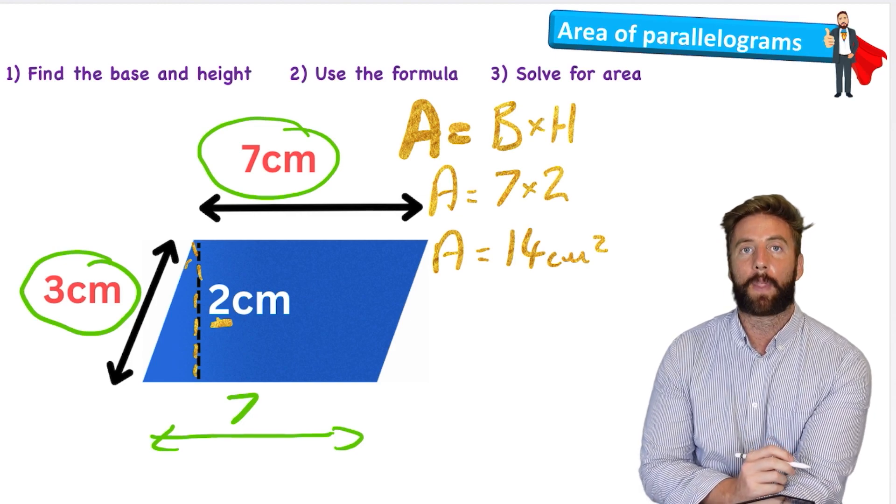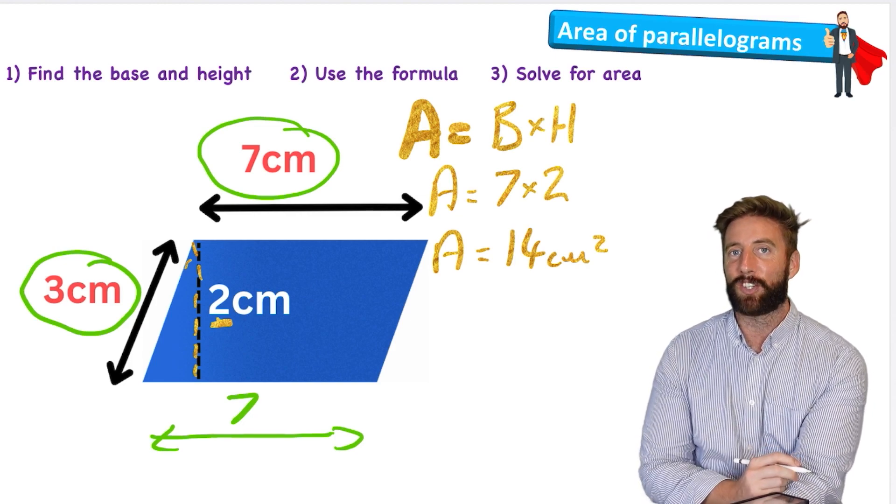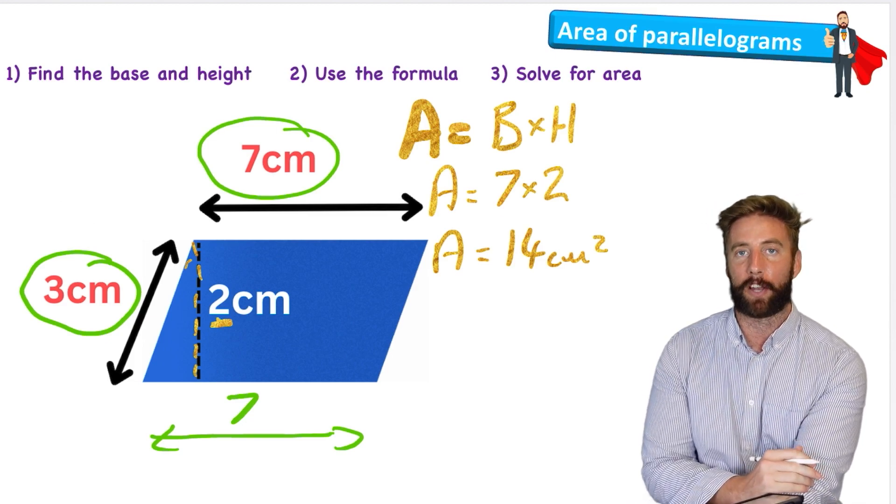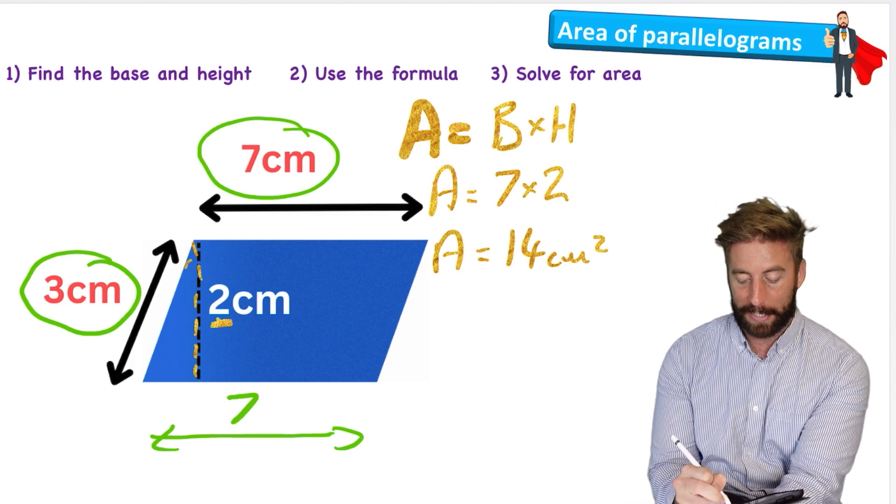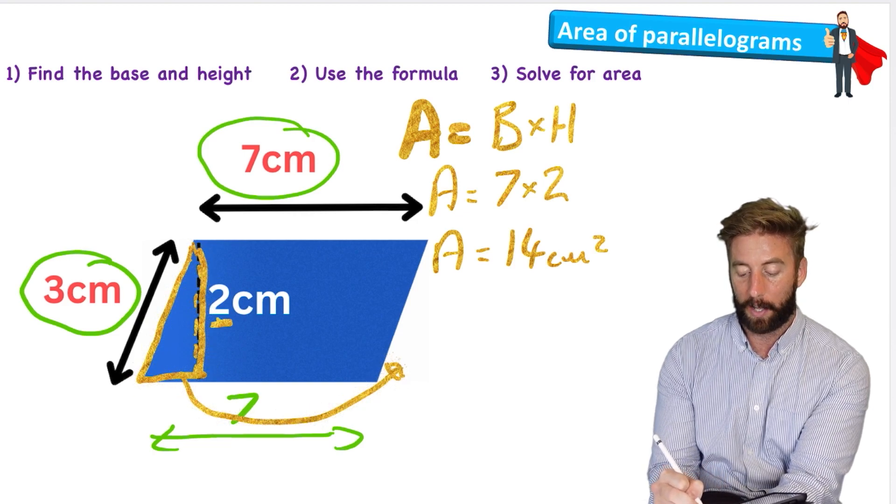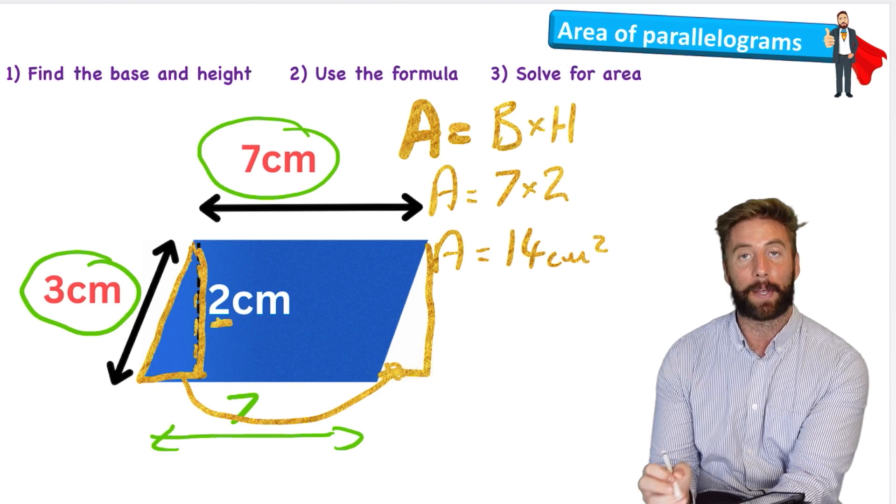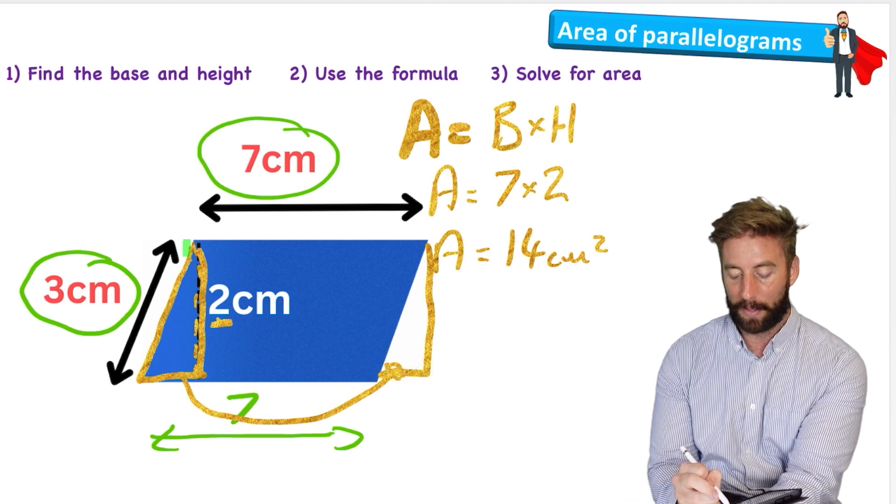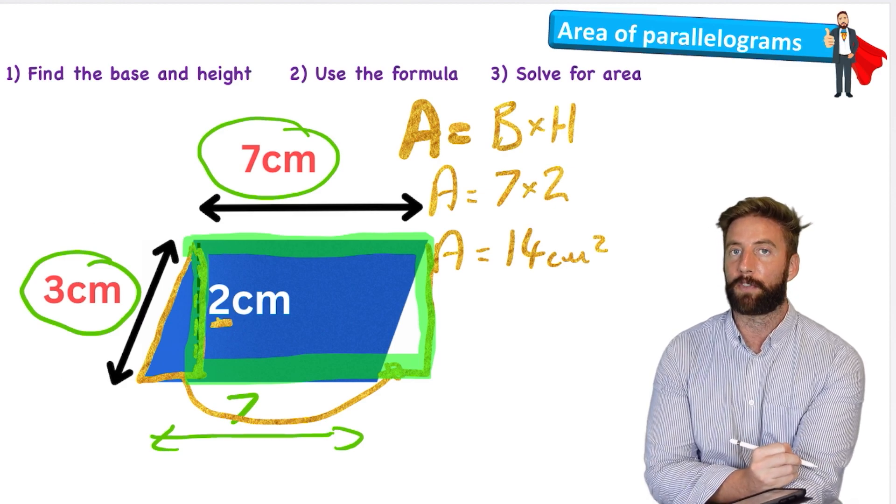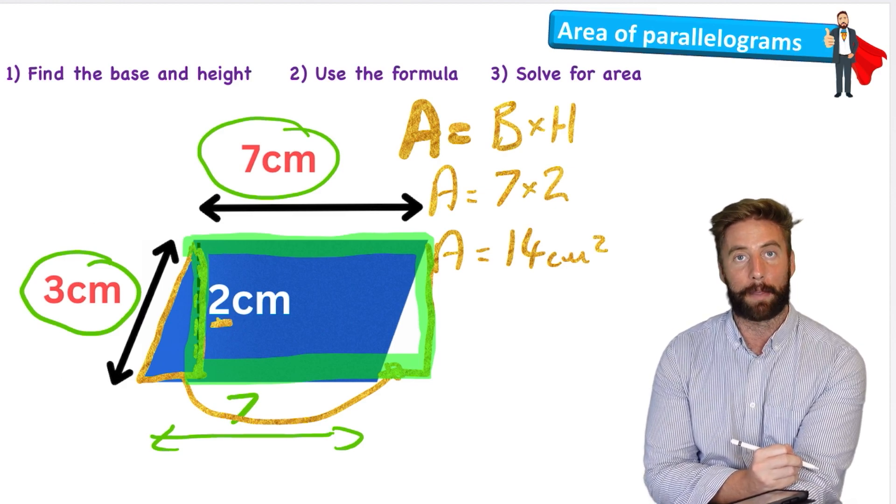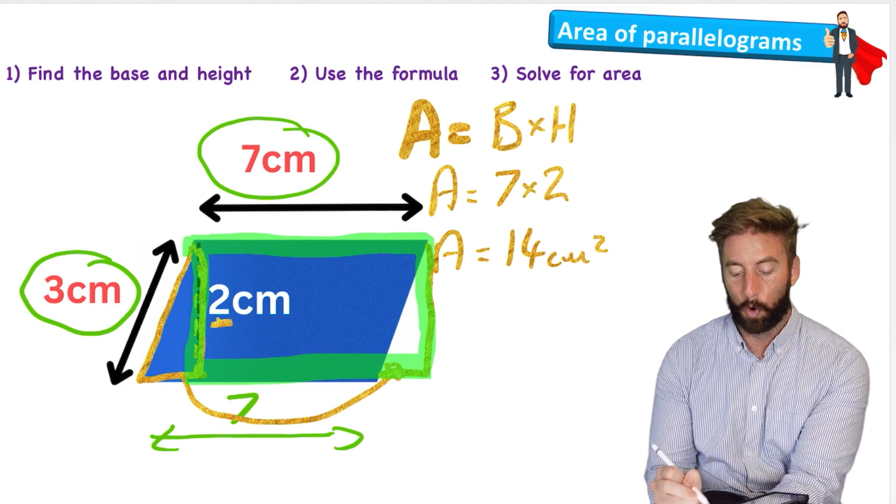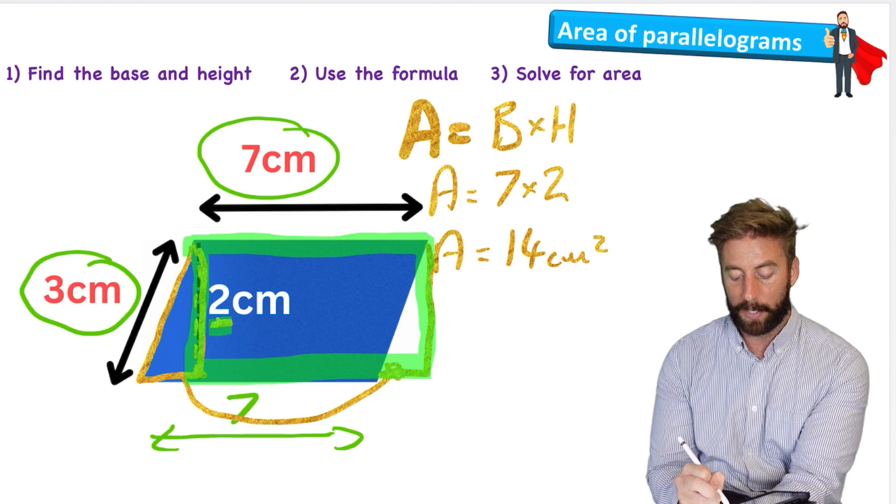So why does this work? How can we use this height of two and not want to use this side length of three? Well, a parallelogram is basically just a rectangle that's been pushed to one side. It's just leaning over a little bit. If you imagine we take this little triangle shape here and we put it on this other side, we're going to fill in the gap and we're going to get left with this rectangle shape. And what do we know about rectangles? Well, to find the area we times the height by the base. So it's going to be the same thing with the parallelogram. All we're doing is times the height, which is two, by the base, which is seven.